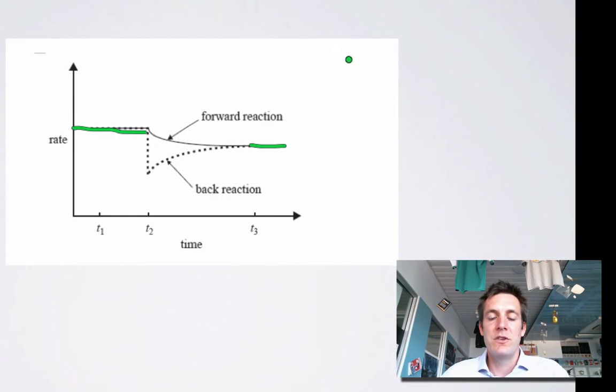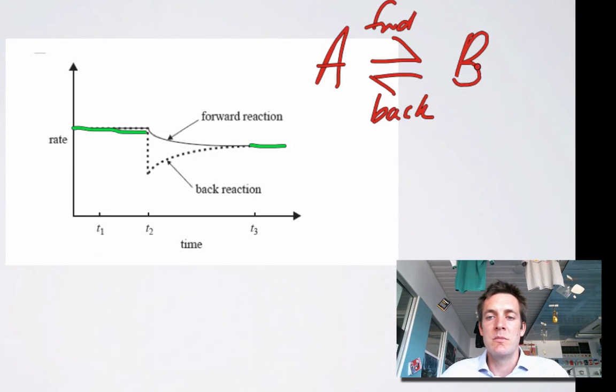If the rate of the two reactions is the same—so remember we're talking about the forward and the backward reaction in any reversible system—if their rates are the same, then the amounts of A and B will stop changing. In other words, the macroscopic properties will remain the same. The concentrations of A and B will remain constant because the forward and backward reactions are occurring at the same rate.